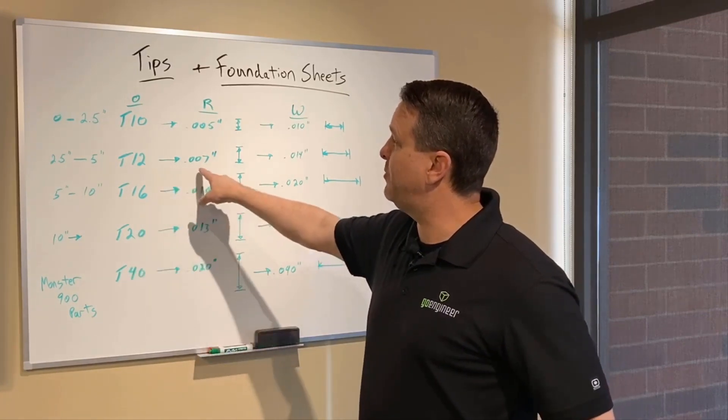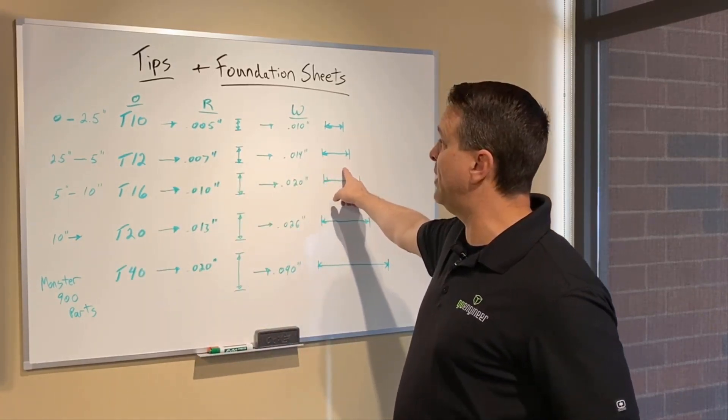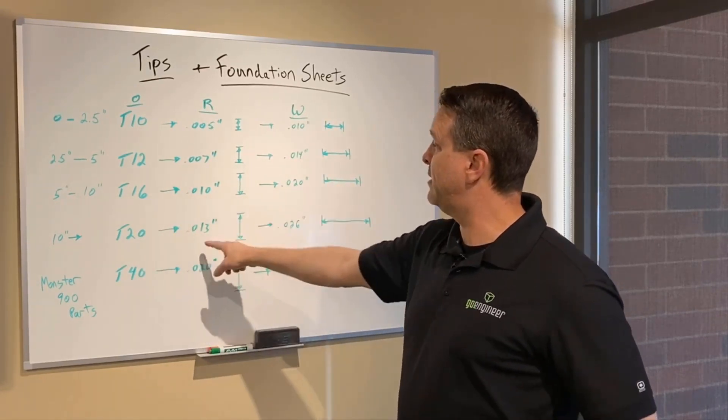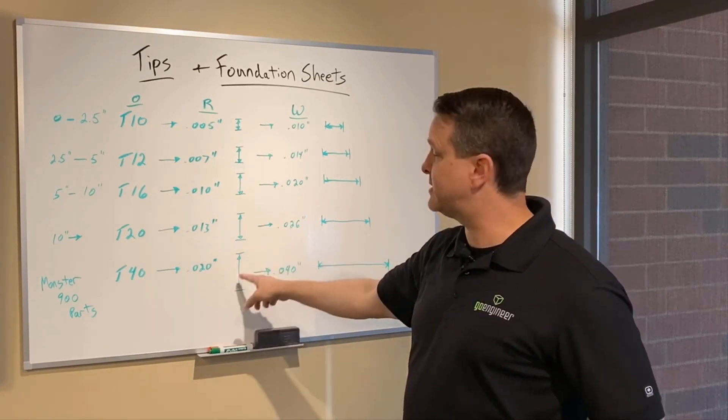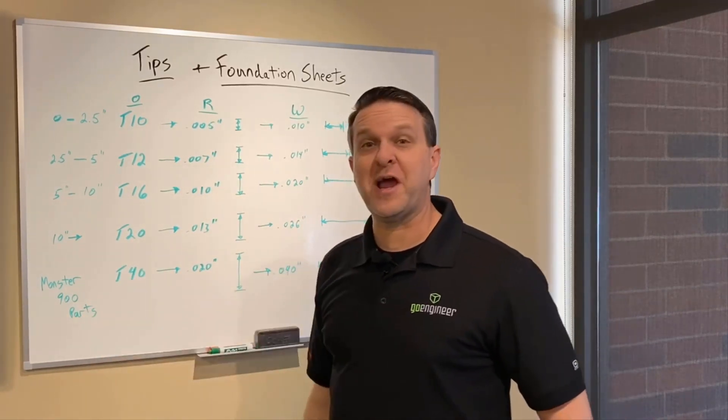So T12 would be a 7 thousandths, correlating to a 14 thousandths toolpath width. 16 goes to 10, and a 20, 13, 26, 20, and 40 for the largest, for the monster 900 parts.